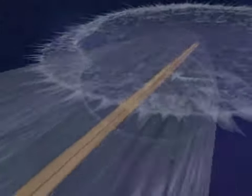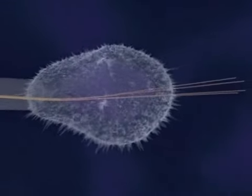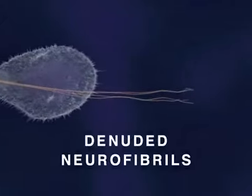Ultimately, both the developing neurite and its growth cone collapse, and some denuded neurofibrils form aggregates, or tangles, as depicted here.